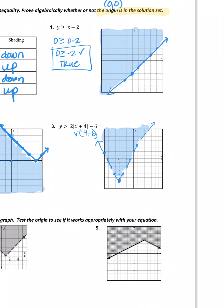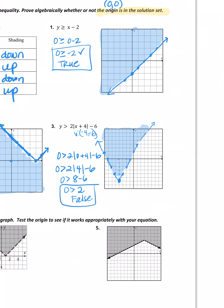Anything inside the V should be a solution. Looking at my graph, the origin (0, 0) is not in the shaded area, so I anticipate this will be a false statement. Let's check: is 0 > 2|0 + 4| − 6? The absolute value of four is four, two times four is eight, so is 0 > 8 − 6? Is 0 > 2? That is false — not a true statement.